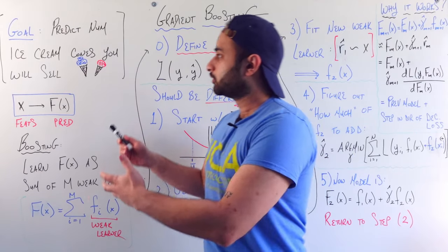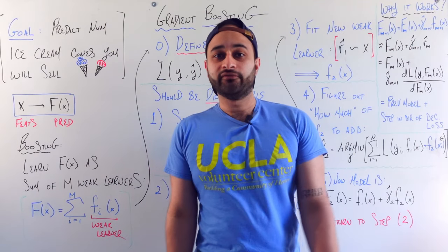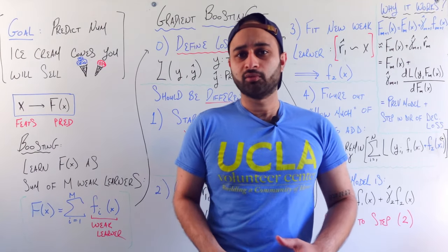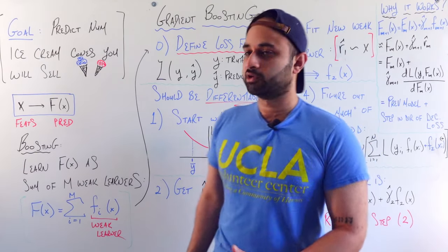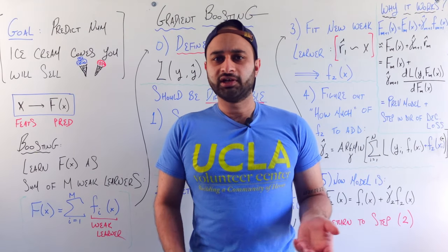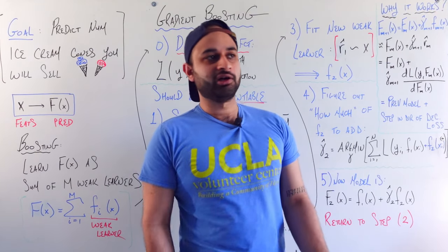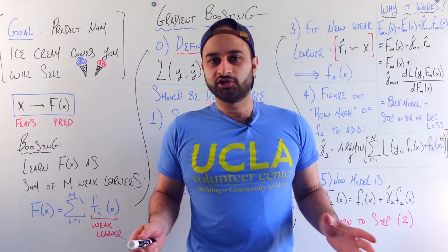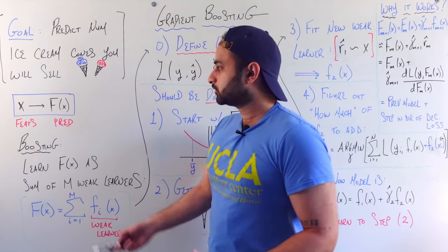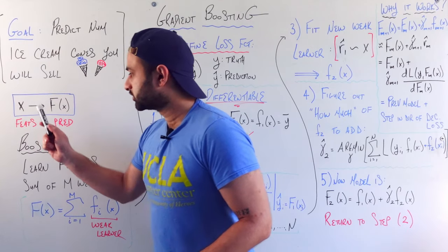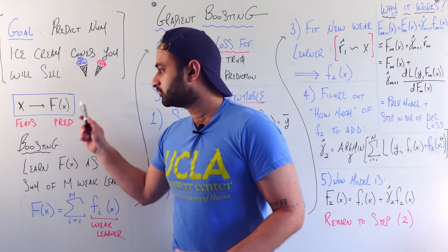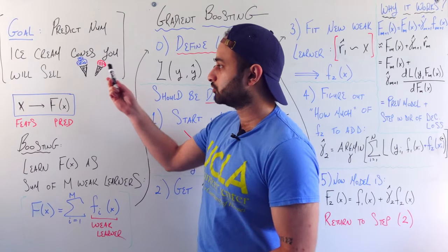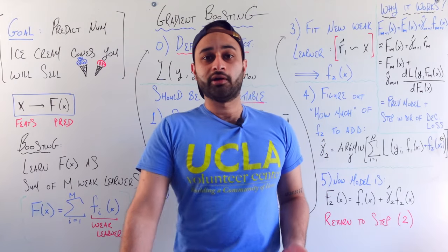Let's say you have the good fortune of owning an ice cream shop and you're trying to build a model which is going to predict the number of ice cream cones you're going to sell on any given day, and there's some features out there — let's say temperature, day of the week, some list of features you can use in your model. You're trying to take those features x and learn some kind of prediction function f of x which is hopefully going to tell you how many ice cream cones you sell on any given day.